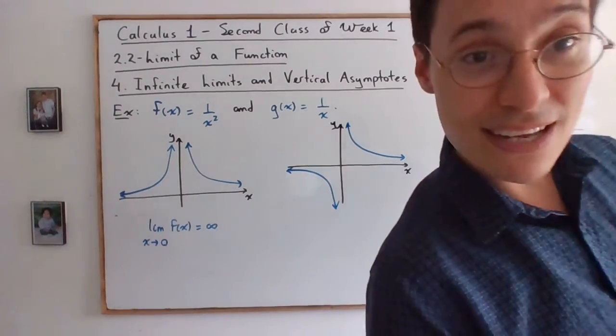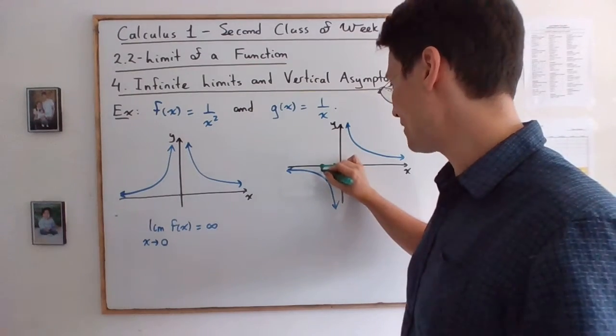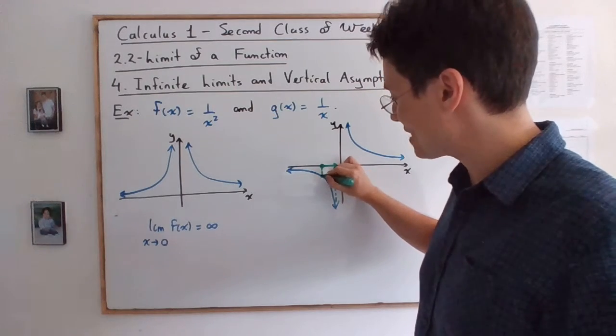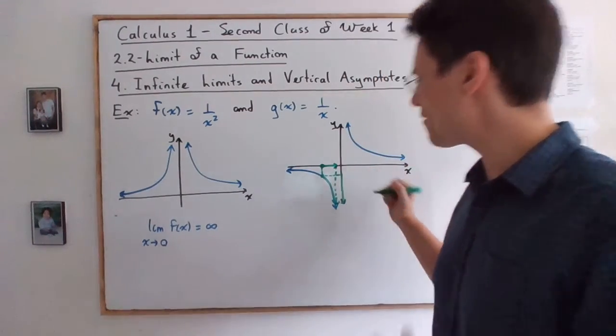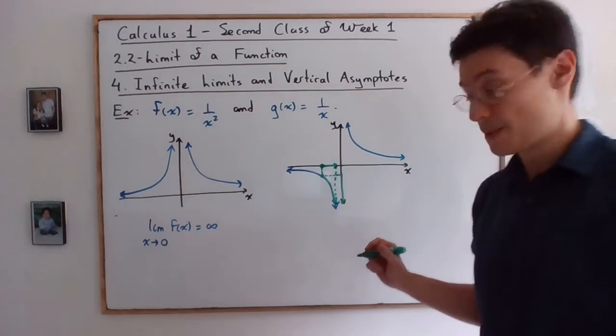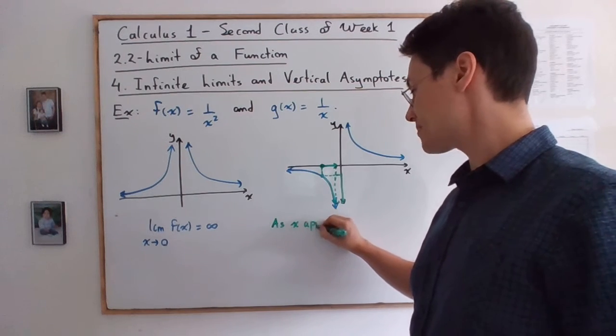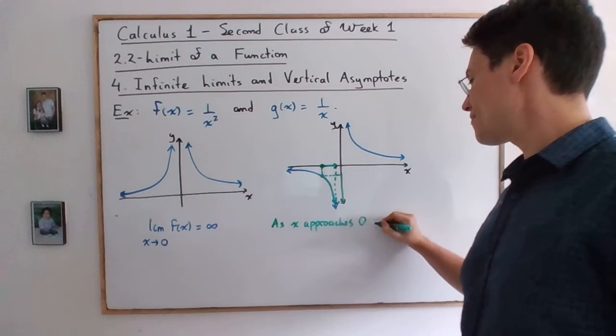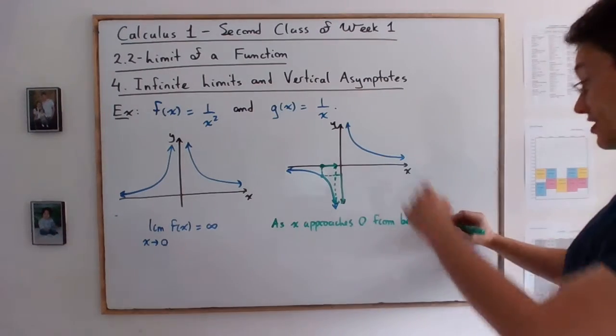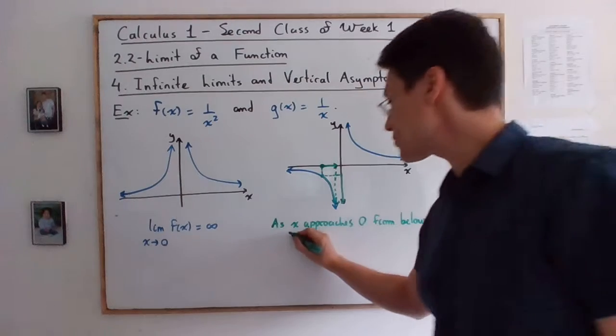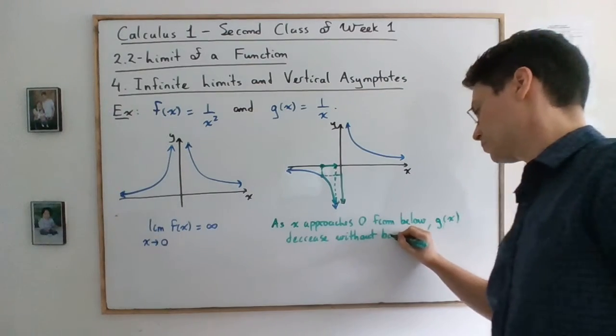So let's study the one-sided limits of this graph. Let's begin with the limit from below. So we're doing one-sided limits like what I presented in the last video. So as we approach 0 from below, as you can see, the function is sinking without bounds. So as x approaches 0 from below, g(x) decreases without bounds.